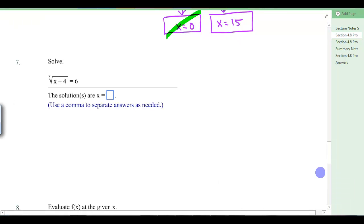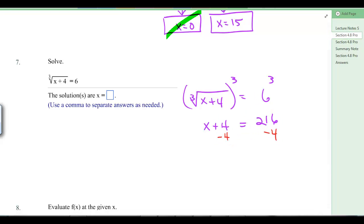Now this one looks a little bit different, because we've got the cube root. So if you have the cube root of something, you want to cube it to get rid of that cube root. So when you cube it, all you're left with is x plus 4 equals, and 6 cubed is 216. You're going to subtract 4, and you get x is 212. So that would be that answer.